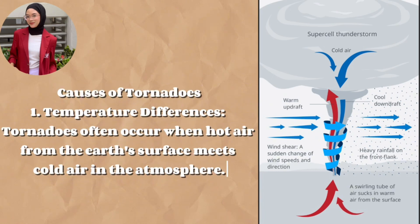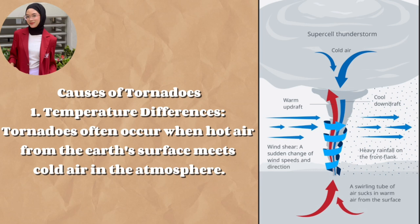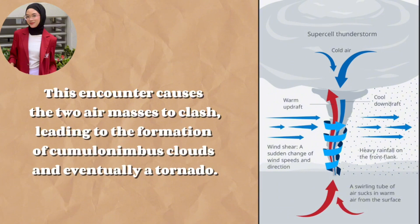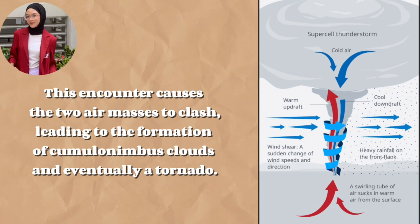Causes of tornadoes. First, temperature difference. Tornadoes often occur when hot air from the Earth's surface meets cold air in the atmosphere. The encounter causes the two air masses to clash, leading to the formation of cumulonimbus clouds and eventually a tornado.